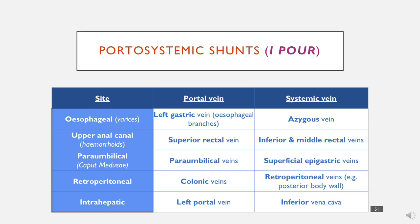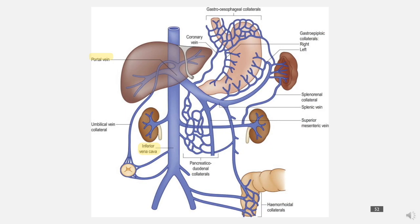Caput medusae are engorged vessels that develop because the paraumbilical veins connect with the superficial epigastric veins — the paraumbilical veins are portal, and the superficial epigastric veins are systemic. Additionally, there are retroperitoneal shunts between colonic veins and retroperitoneal veins, and the enteropathic shunt is usually directly from the portal vein to the inferior vena cava.